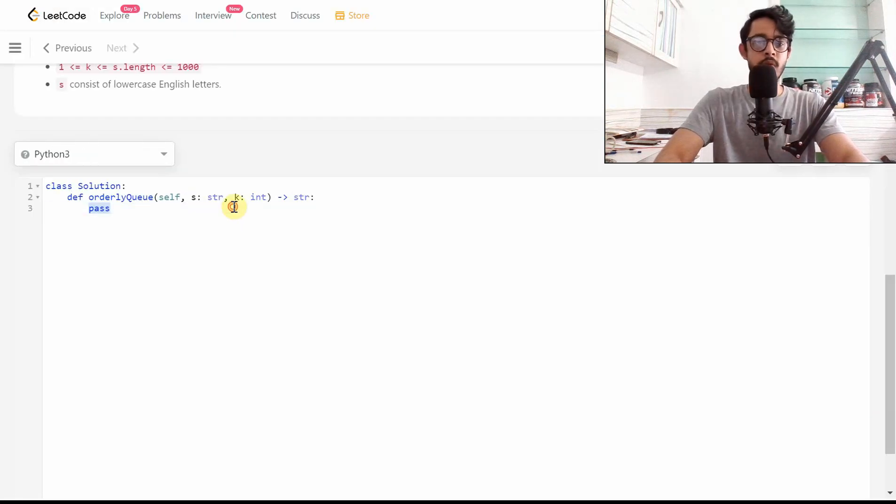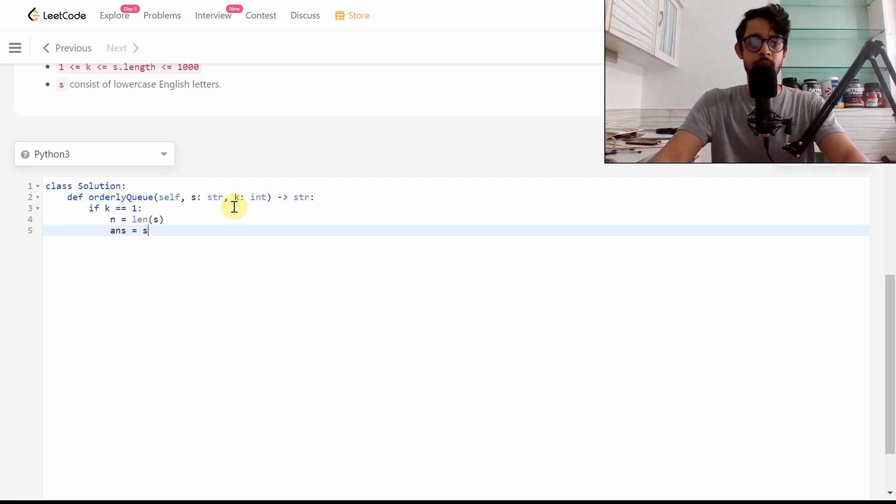Now this is such a simple case that we're going to go ahead and write code for it, because the second case is much more interesting. Okay, if k equals 1, we want to do some computation. Let's find the length of the string first, and we want to have an answer string, so we'll initialize that with s as well. Now we want to iterate over all of the elements n times.